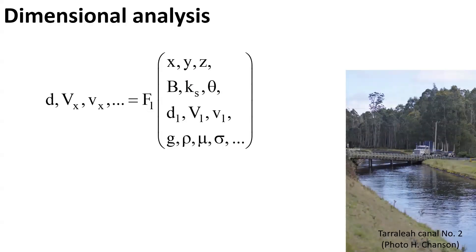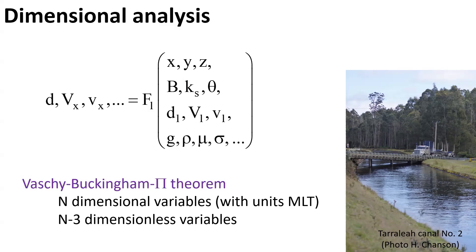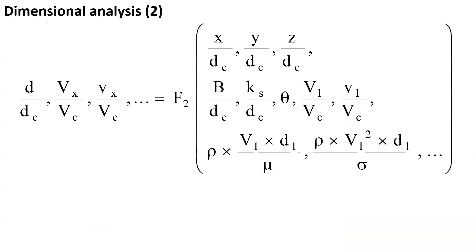The fundamental approach is based upon the basic principle of similitude and dimensional analysis. If we consider an operational flow, the water depth, velocity, and turbulent velocity at location x, y, and z within the flow are functions of the boundary conditions: the channel width, boundary roughness, longitudinal bed slope, inflow properties (inflow depth, inflow velocity, inflow turbulent velocity), gravity constant g, and fluid properties. With n=13 dimensional variables that include units of mass, length, and time (MLT), the Vaschy-Buckingham Pi theorem implies we have n minus 3 dimensionless variables of relevance.